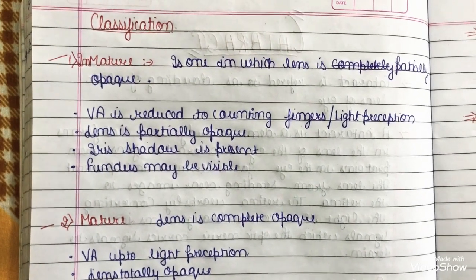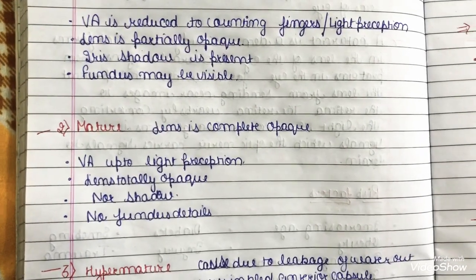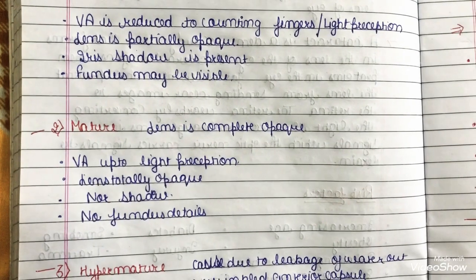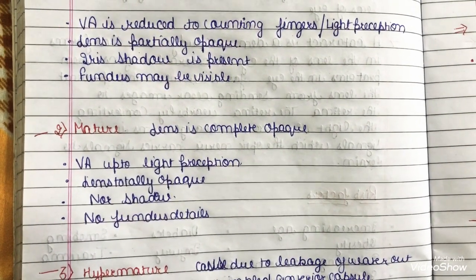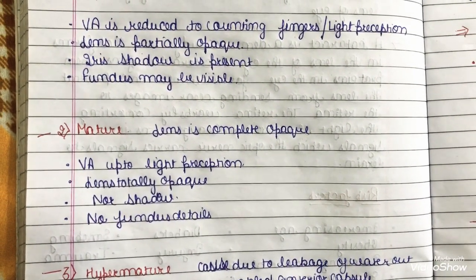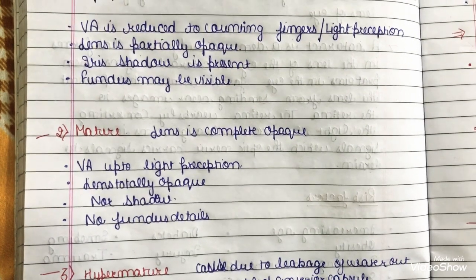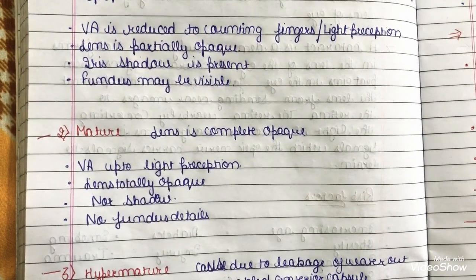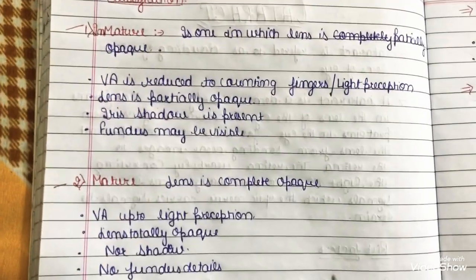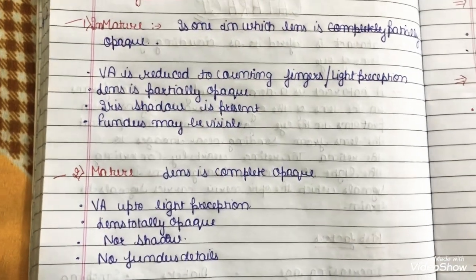In mature cataract, the lens is completely opaque. Visual acuity is reduced to light perception only. The lens is totally opaque, no iris shadow is present, and no fundus details are visible. You can use these differences to compare immature and mature cataract.